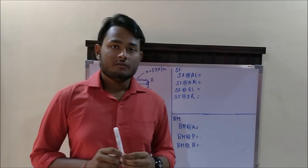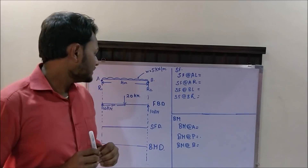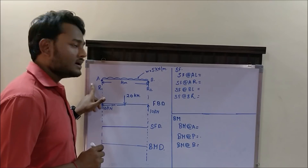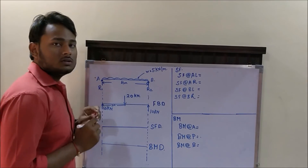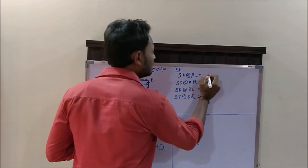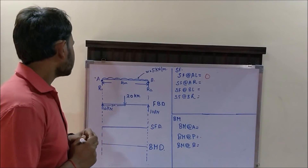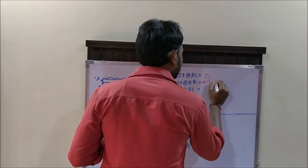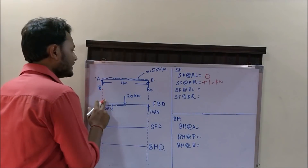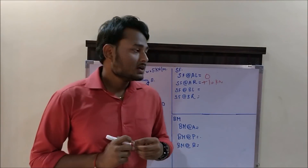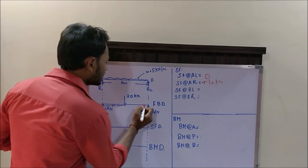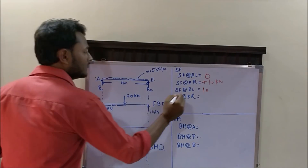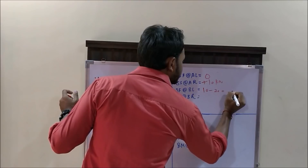Now, let us come to our main area of interest — the shear force diagram. Using the traditional method, consider a point just to the left of A. As there is no point load acting, the shear force just to the left of A is equal to 0. While the shear force just to the right of A is equal to +10 kN, as a reaction of 10 kN is acting there. Consider a point just to the left of B. The total shear force at this point will be 10 (from the reaction) minus 20 (because of the UDL), which equals minus 10 kN.